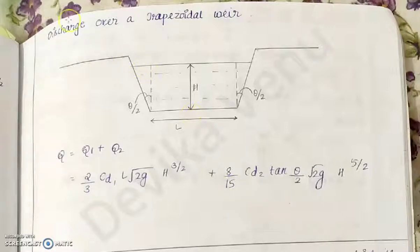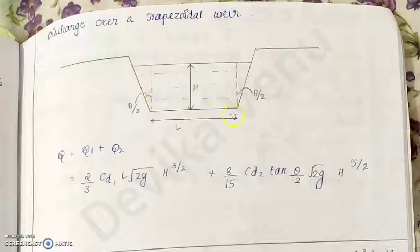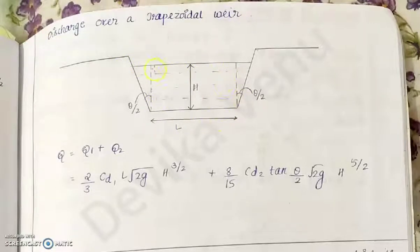Hello students, now we will see discharge over a trapezoidal weir. So consider a trapezoidal weir like this. You can see the trapezoidal weir over here — the opening is a combination of rectangular and triangular weir. So it is a combination of a triangular weir and a rectangular weir.